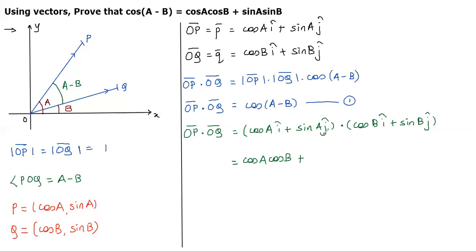After this, I have to multiply the coefficient of j cap with j cap. So, sinA × sinB. Rest of the terms, no need to consider. So, what I got is OP · OQ = cosAcosB + sinAsinB. Let it be equation number 2.